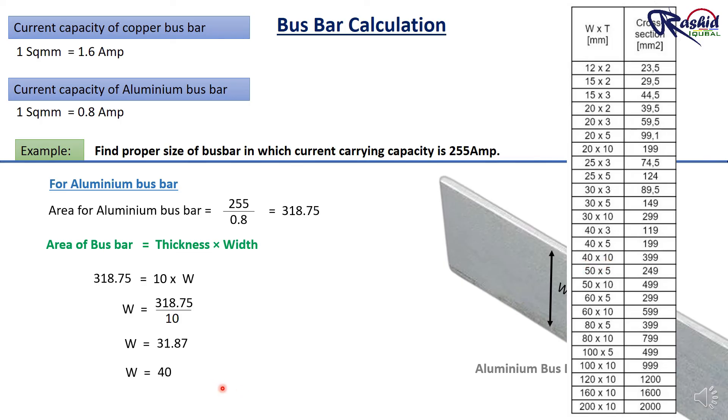Therefore, the selected size of aluminium busbar is 40 mm by 10 mm, which is capable of carrying the required 255 ampere current.